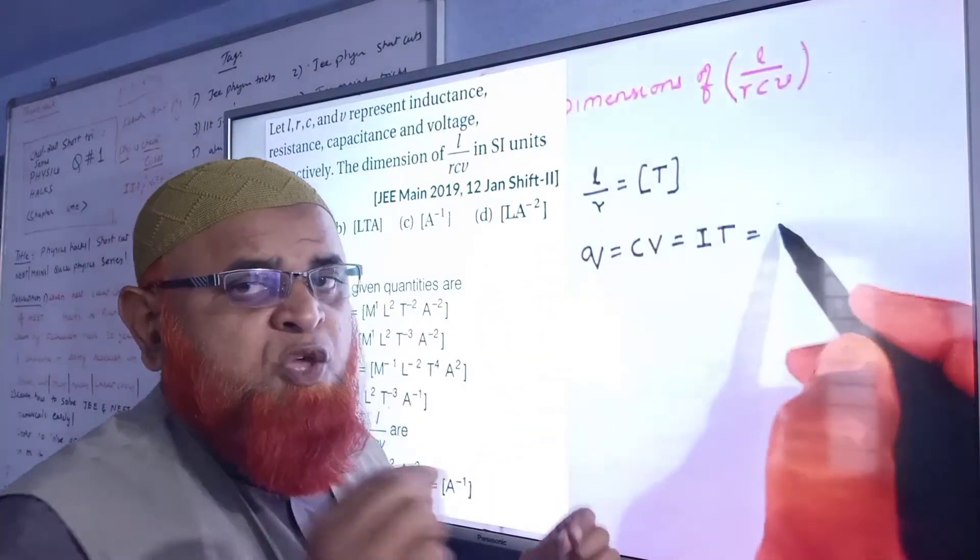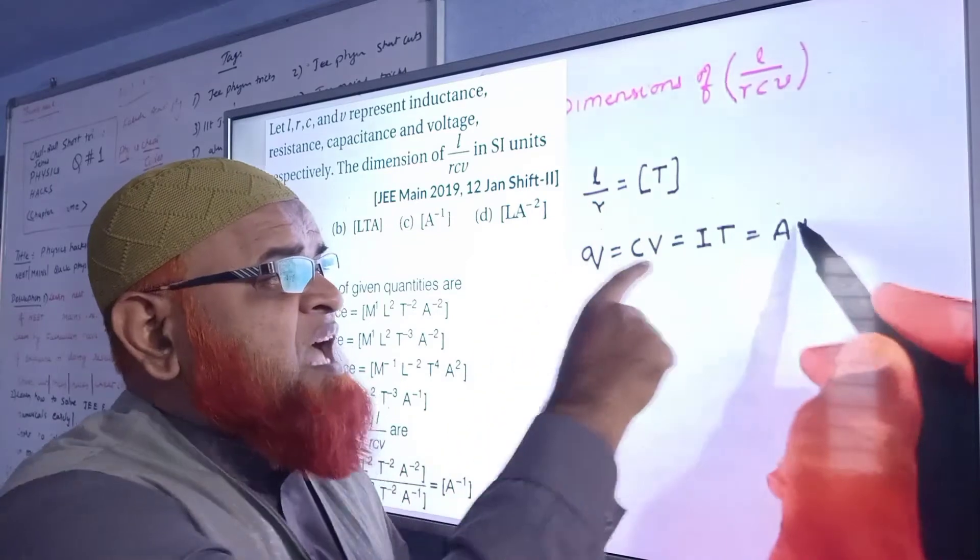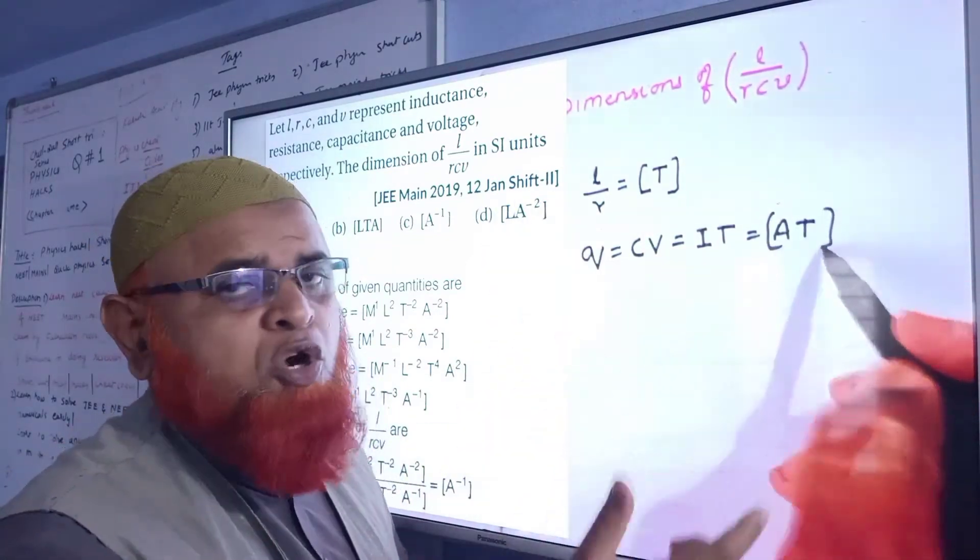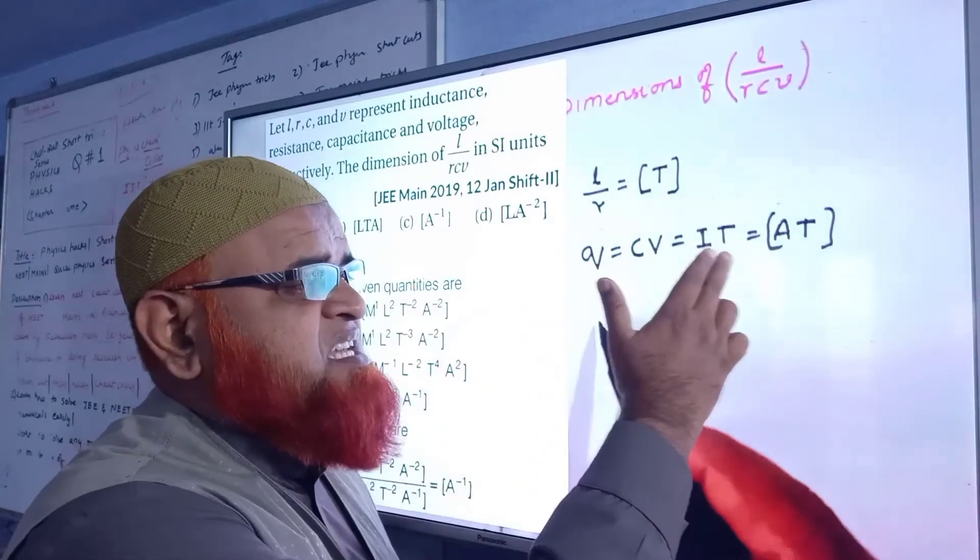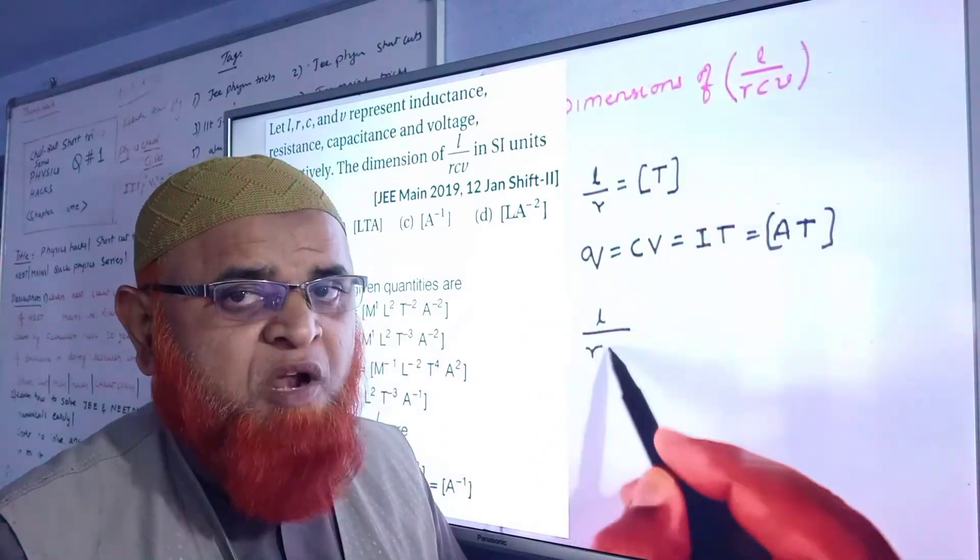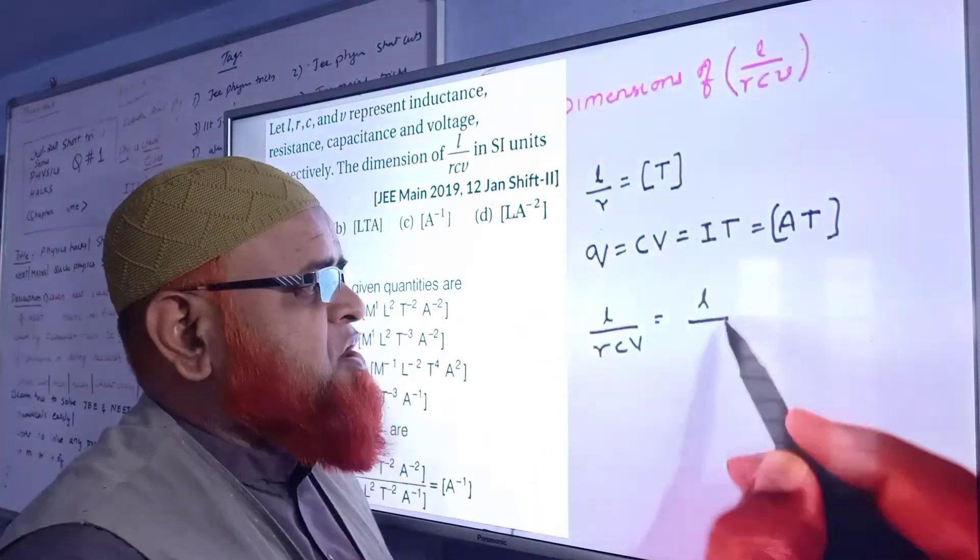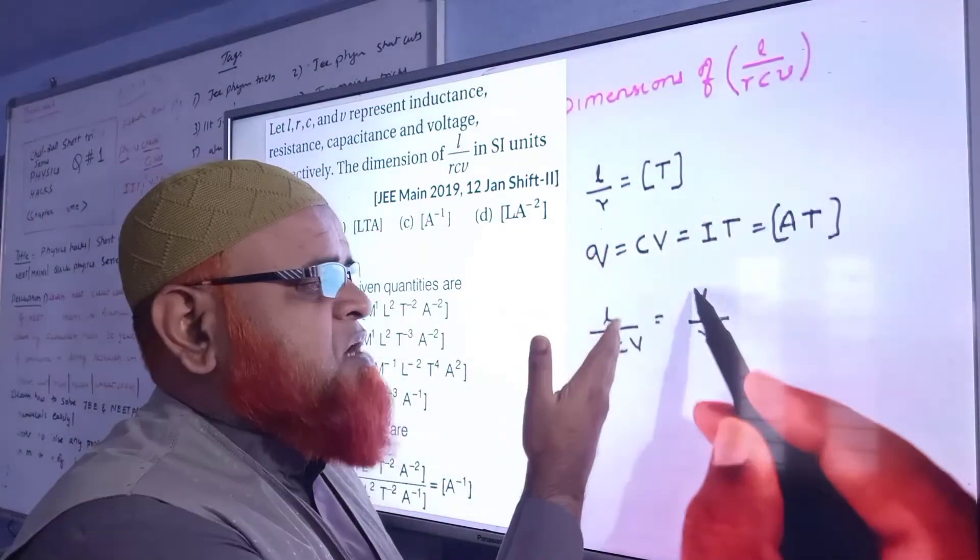You also know that charge can be represented with I×T, current into time, because I = Q/T, so Q can be written as IT. I is represented with A in the dimensional formulas. Dimensional identity for I is A, ampere.